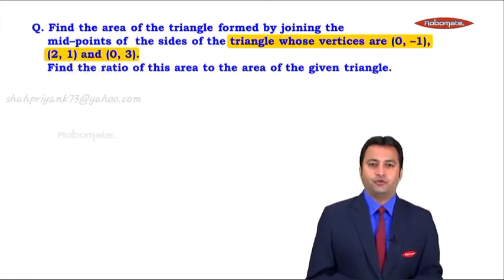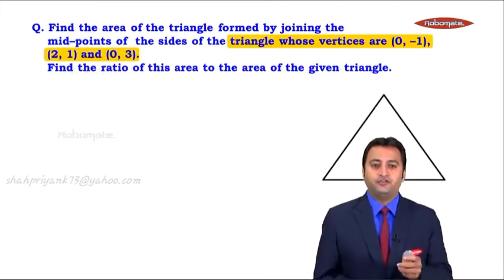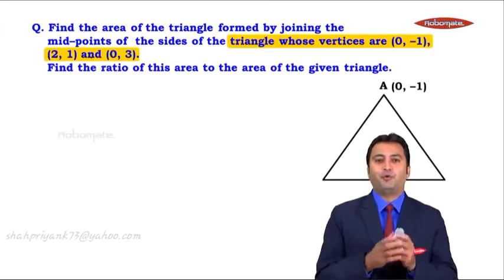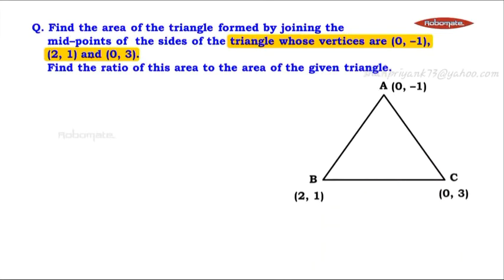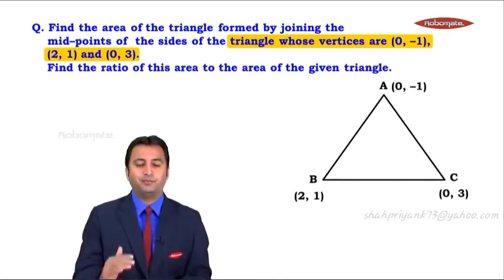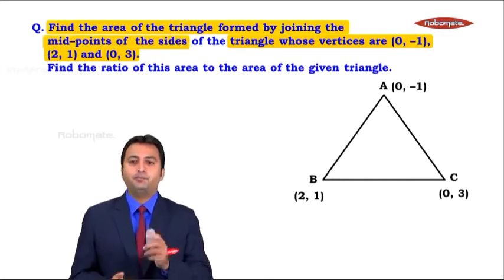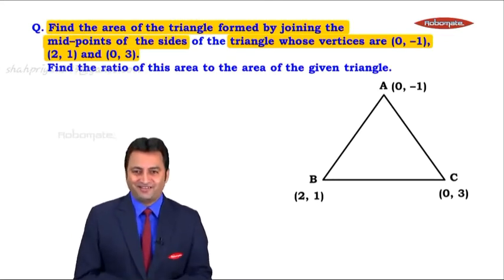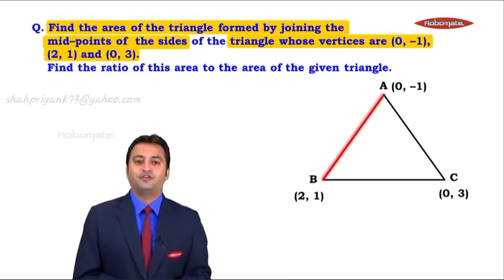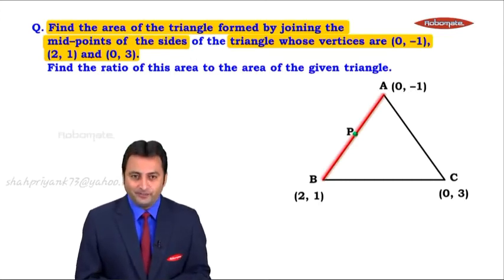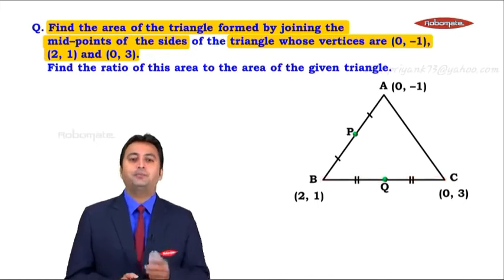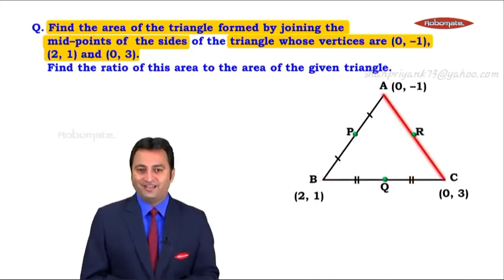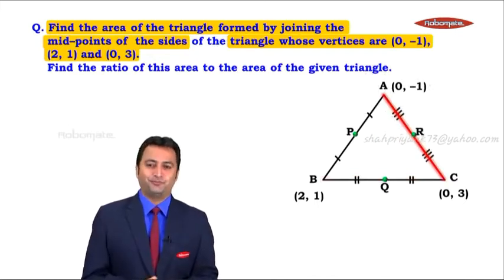There is a triangle given to us whose vertices are (0, -1), we name it as point A; (2, 1) that is point B; and (0, 3) that is point C. We don't need to calculate the area of triangle ABC for the time being. Further, there are midpoints of each and every side. Let's mark those midpoints: P is a midpoint of side AB, Q is the midpoint of side BC, and R is the midpoint of side AC. I have marked all three midpoints.